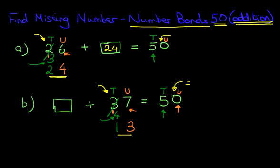And we have our answer. It is 13. 13 plus 37 equals 50. So that is another method of how we find the missing number for number bonds to 50 for addition questions.